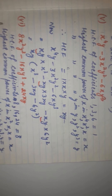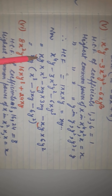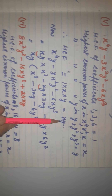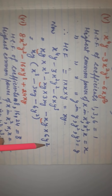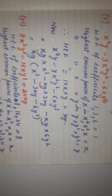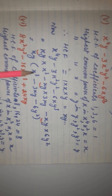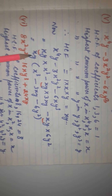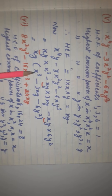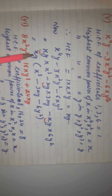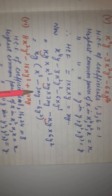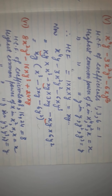We write each term as a product with HCF xy: xy into x³ gives x⁴y, xy into 3xy gives 3x²y², and xy into 6y² gives 6xy³. Taking xy common, we get xy(x³ minus 3xy minus 6y²). This is the factorized form of the given algebraic expression.